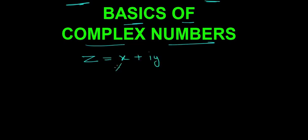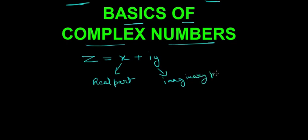The x part is known as the real part, and the y part is the imaginary part — this is something that we imagine only; it does not exist in the real world. Together they combine to make a complex number.